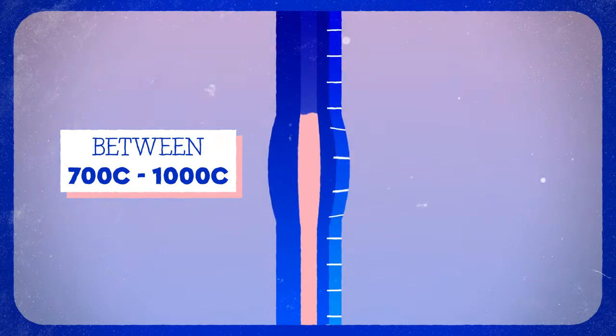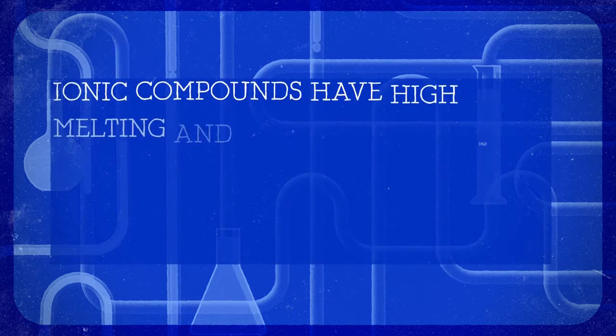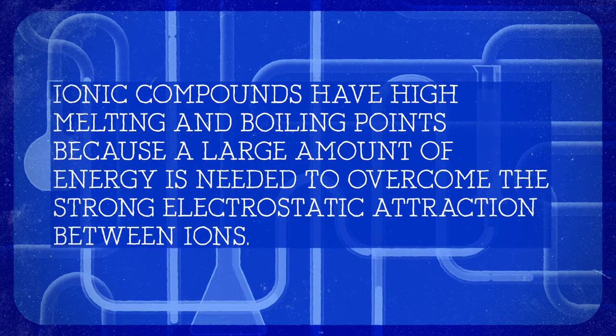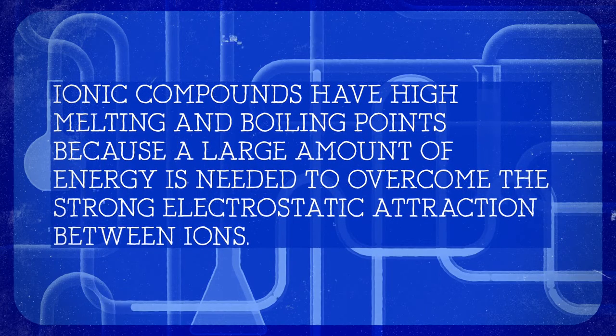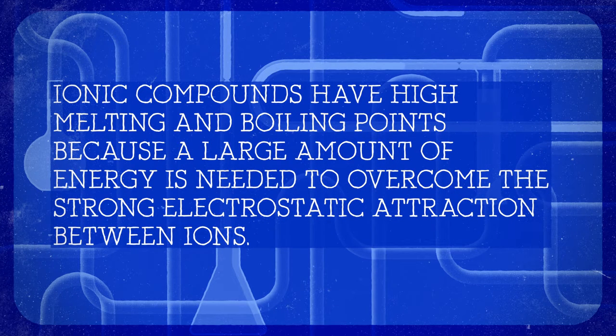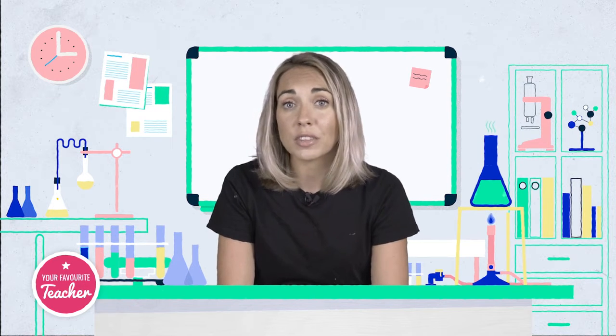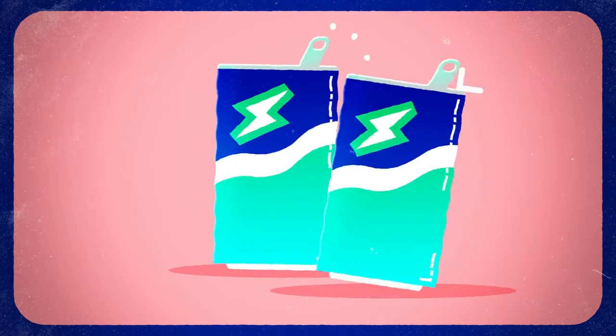The melting and boiling points of ionic compounds are very high. For an ionic compound to melt or evaporate, the particles need to separate. But the particles in an ionic compound that need to spread out are charged ions. The attraction between the oppositely charged ions is strong, and so they don't separate very easily — much like trying to prise apart your teacher from their morning coffee. The bond is strong. To separate the ions, enough energy is needed to overcome the attraction of the electrostatic forces. These forces are super strong and a huge amount of energy is required.